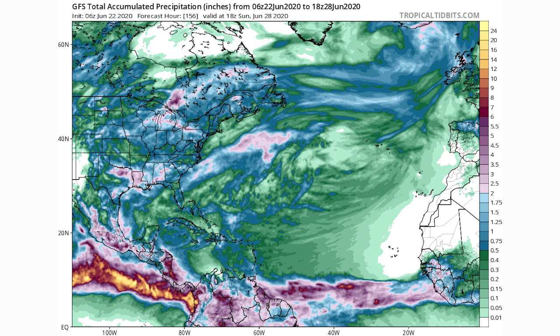Looking at total rainfall, you can see those pinks in the middle of the Atlantic — that's pretty much our tropical disturbance and its rainfall. Not very major impacts whatsoever from this one. We're not expecting too much, maybe two inches over the ocean, and obviously hardly anybody is going to be there, so not really any impacts as far as total rainfall is concerned.